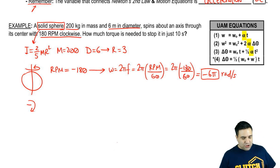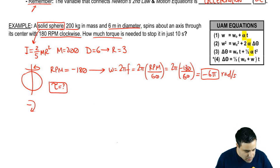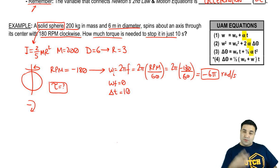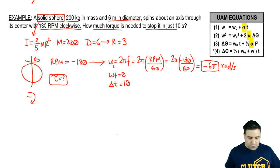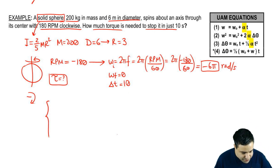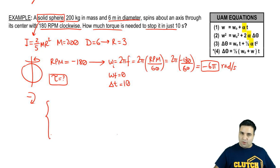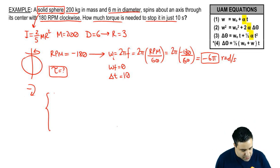I want to know how much torque is needed to stop this thing in just 10 seconds. So I'm asking, what is the torque to stop it? That means that this is my initial omega, and I want to have a final omega of zero, and I want to do this in just 10 seconds. So delta t equals 10. You start seeing all these motion variables.